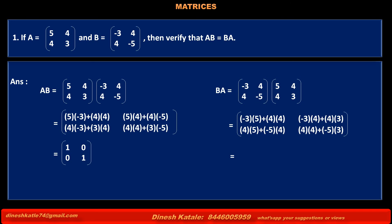Solving the above, we get [[1, 0], [0, 1]]. Since AB equals BA equals the identity matrix, the result is verified. For better understanding, take a pause here and try to solve this problem again in your notebook without copying.